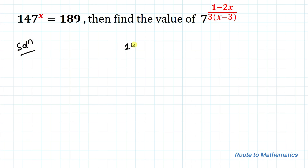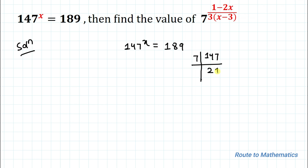So here we have given that 147 to the power x is equals to 189. In the next step let's just factorize both the values. So I am going for 147 first. Dividing by 7 we have 21, again dividing by 7 we have 3, and dividing with 3 we have 1.